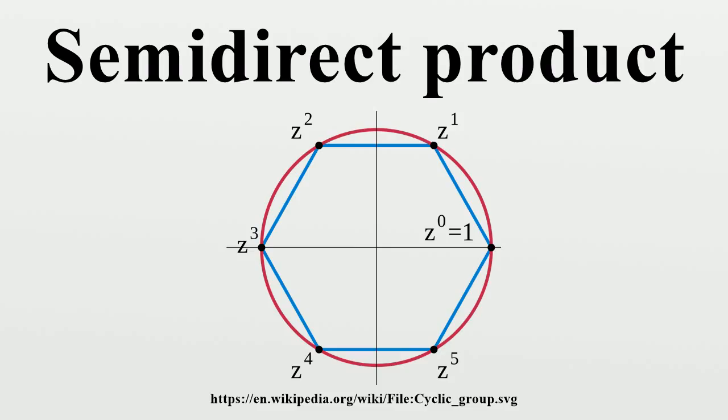Groupoids: Another generalization is for groupoids. This occurs in topology because if a group acts on a space it also acts on the fundamental groupoid of the space. The semi-direct product is then relevant to finding the fundamental groupoid of the orbit space.